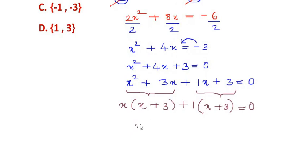So we can write it as (x + 3)(x + 1) equals 0.